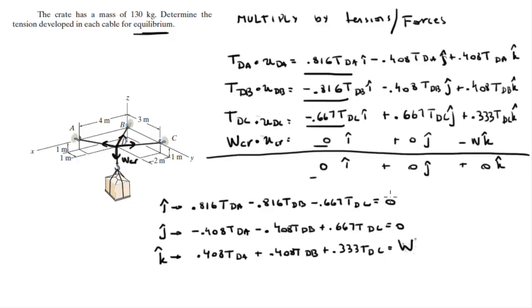Now this one becomes very easy to solve. Let's say this equation 1, this equation 2, this equation 3. If you look at equation 2 and equation 3, equation 2 has the coefficients for the first two minus 0.408 minus 0.408, and the first two for equation 3 are positive 0.408. So if you add equation 2 and equation 3 together, these two would cancel out, and you get the TDC by itself. You get TDC is equal to the weight, which means that TDC is basically equal to 130 kilograms times the acceleration of gravity, which is 9.81, and it comes out to be 1,275.3 Newtons.